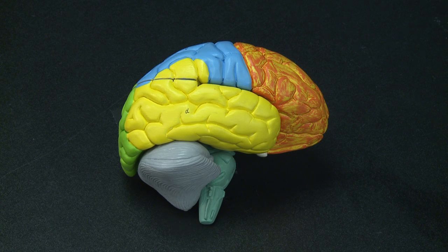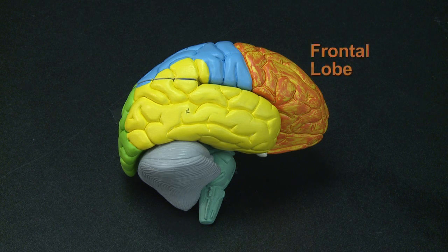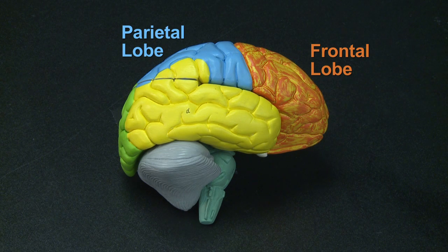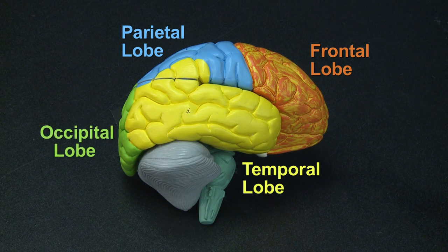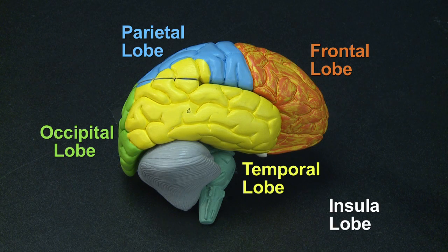When looking at the brain from the lateral view, we can easily identify four lobes: frontal in orange, parietal in blue, temporal in yellow, and occipital in green. Deep underneath the temporal lobe sits the fifth lobe, or insula.